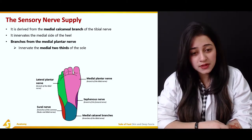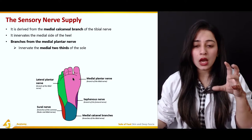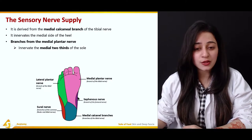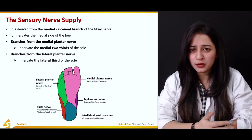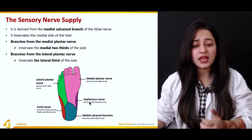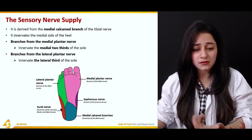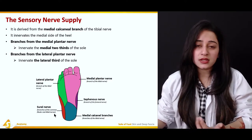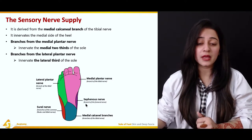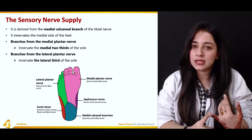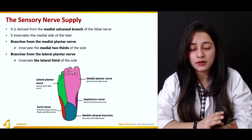The medial plantar nerve, also a branch of the tibial nerve, innervates the medial two-thirds of the sole. You can see the pink portion occupying a large space of the foot. The lateral plantar nerve occupies the lateral one-third of the sole. We also have the sural nerve — a branch of the common fibular and tibial nerves — supplying some of the lateral aspect, and the saphenous nerve, a branch of the femoral nerve. The major nerve supply to memorize is the medial plantar nerve, lateral plantar nerve, and the medial calcaneal branches of the tibial nerve.